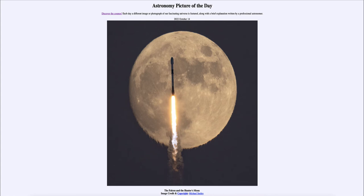The moon has two different areas — lighter and darker. The lighter areas are the highlands, which are the older areas on the moon, more heavily cratered. The darker areas are the maria, or seas, which are lava plains and the younger areas on the moon. Everything on the moon is old: the maria might be three and a half billion years old, whereas the highlands are four and a half billion years old — all very old compared to pretty much anything we have here on Earth.